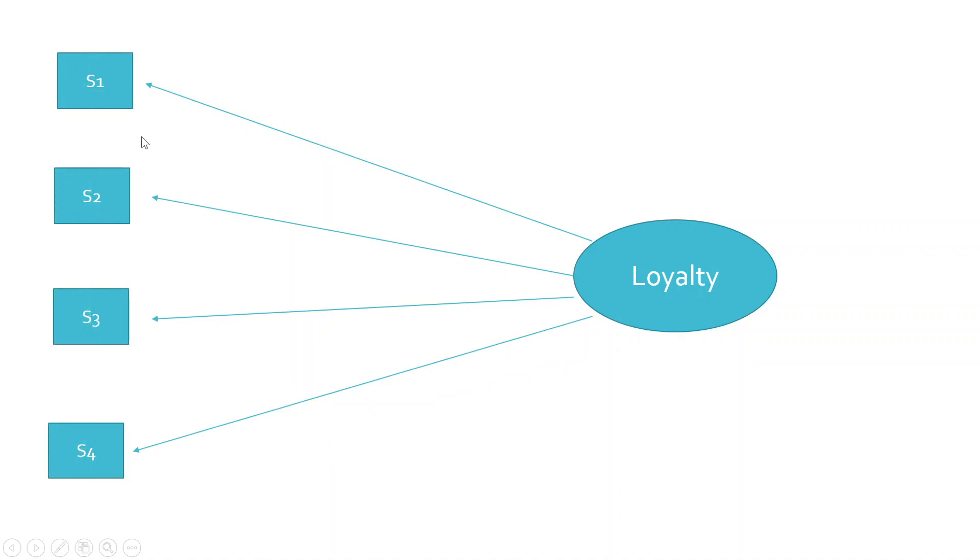If these two players are having some amount of cohesion or correlation among them, then only overall the performance of the football team will be good. So similarly, in our statements also, we expect some amount of correlation existing among these statements—S1, S2, S3, S4—so that they can be clubbed into one construct, that is loyalty.